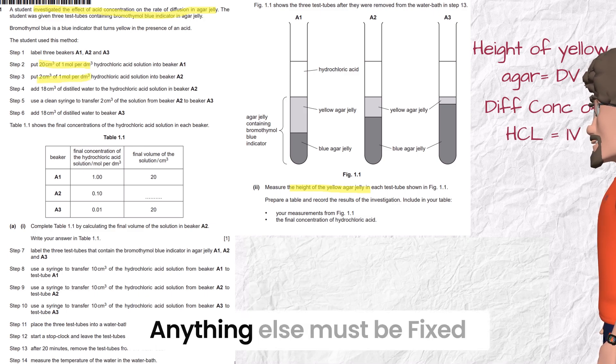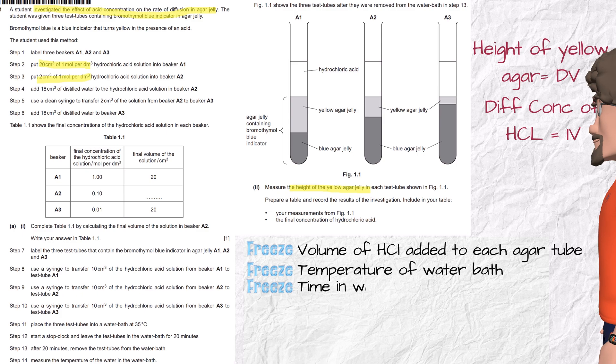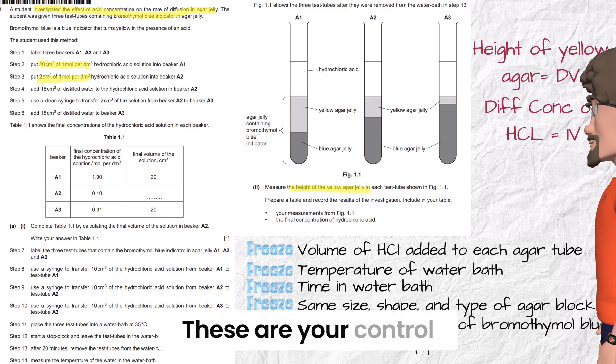What to freeze? Anything else must be fixed like volume of HCl added to each agar tube, temperature of water bath, time in water bath, same size, shape, and type of agar block, same concentration and amount of bromothymol blue, and use the same equipment. These are your control variables.